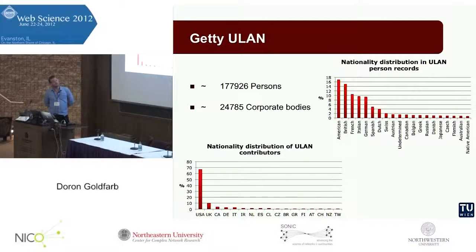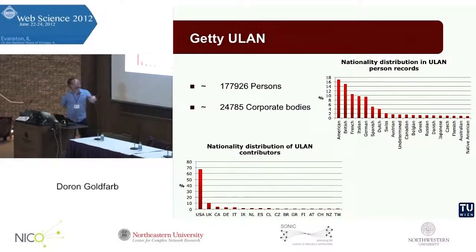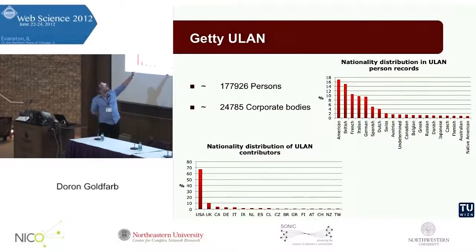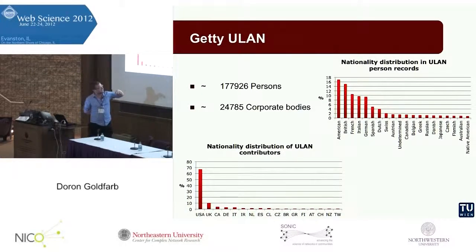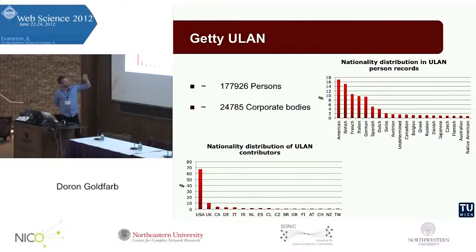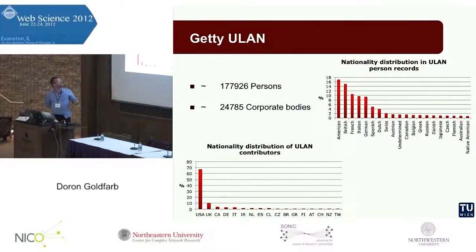To give some overview of the data present in the Union List of Artist Names: it covers about 178,000 persons and 24,000 so-called corporate bodies, which represent families or firms. If you look at the nationality distribution of personal records, you will see that the majority of persons represented are of American or British nationality, then we have French, Italian, German, and Spanish. So you can imagine this is more or less focused on what we call European and American art history. The majority of contributing institutions are from the United States, which is no wonder since the list is maintained by the Getty Foundation, located in Los Angeles.